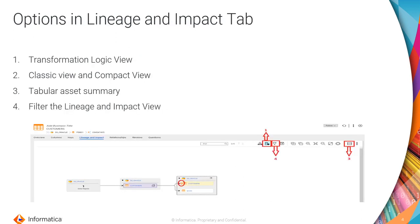What are the options available in the Lineage and Impact tab? There is a reference screenshot with highlighted numbers from 1 to 4. Number one: the icon represents transformation logic view, which enables the transformation logic in the lineage diagram. Number two: classic view and compact view. Number three: tabular asset summary. Number four: filter the lineage and impact view.